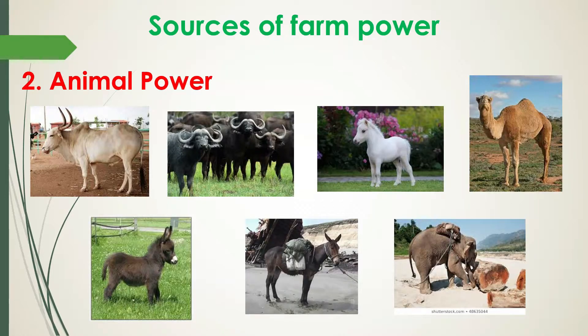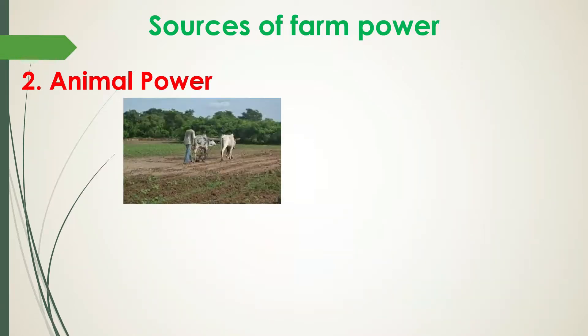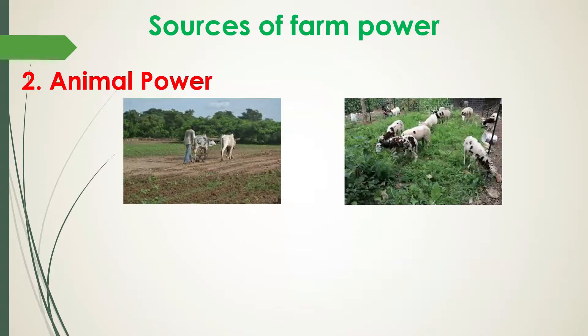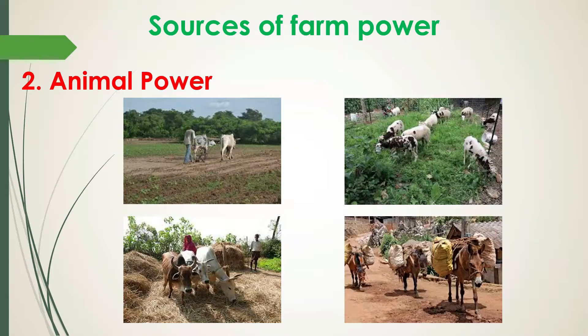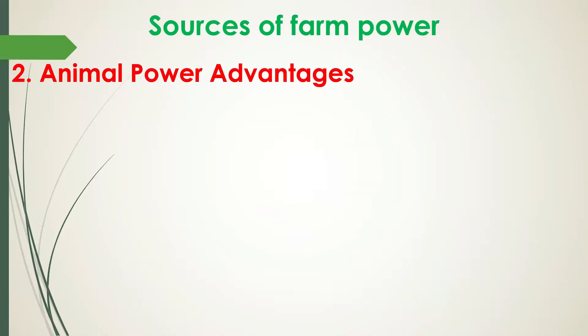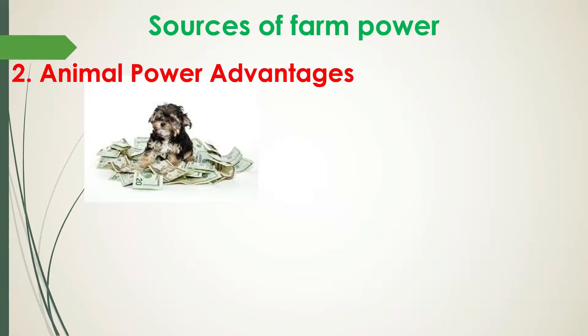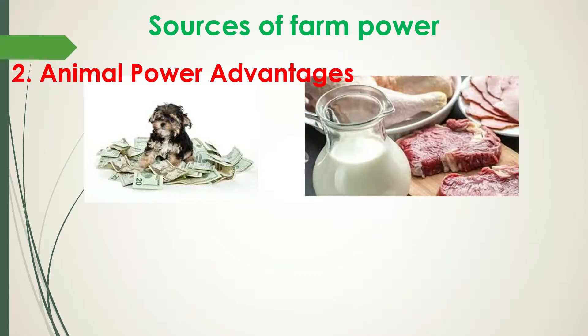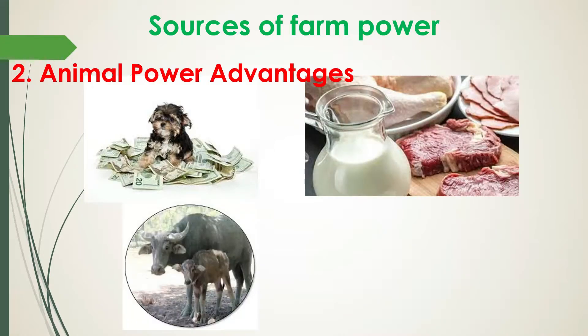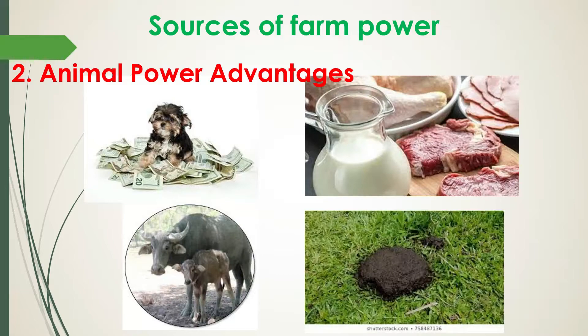These working animals are usually used in land preparation, weed management, crop threshing, and transport. Some of these animals can generate about 750 watts or 1 HP for doing farm work. The advantages of using animals are: cheap to maintain, multipurpose use for meat and milk, self-replacement, and fertilizer/manure production.